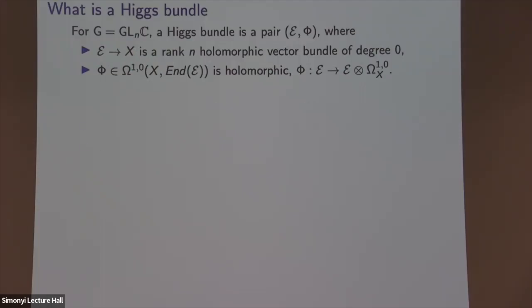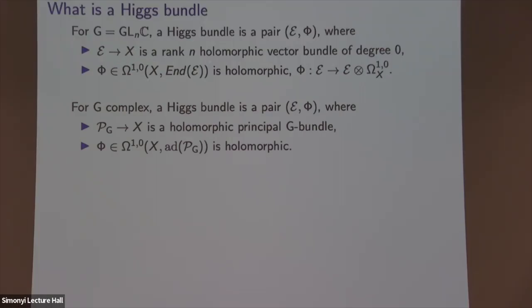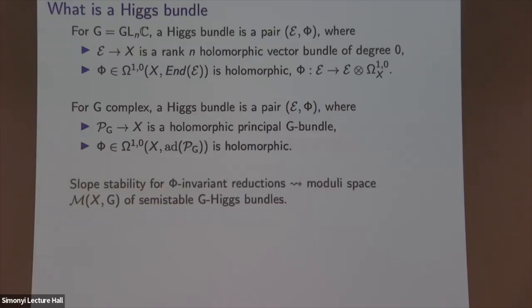For a complex group G, a Higgs bundle is a pair (E, φ) where P_G is a holomorphic principal G-bundle, and φ is a holomorphic (1,0)-form valued in the adjoint bundle. There are natural notions of stability which generalize slope stability for vector bundles, and using these notions one can form a moduli space of semistable objects — that's the object of study.